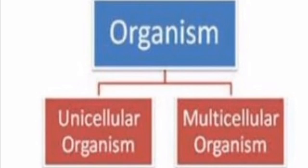Microorganisms have a somewhat different cellular structure. They do not have membrane-borne organs found in eukaryotic cells. The plasma membrane, cytoplasm and nucleus are their only components. Such cells are called prokaryotic cells.